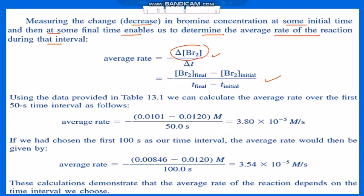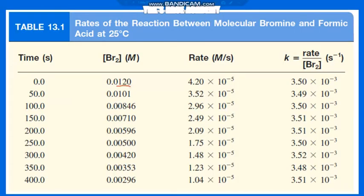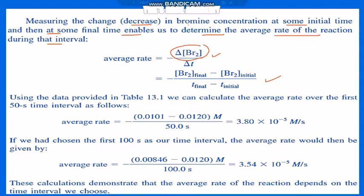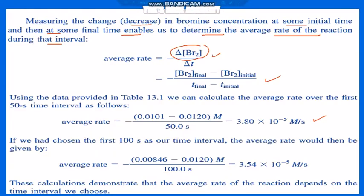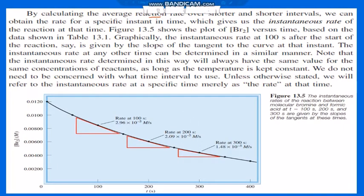A similar calculation at 100 seconds gives an average rate of 3.54 × 10⁻⁵ mol/L·s. These calculations demonstrate that the average rate of reaction depends on the time interval chosen. By calculating the average reaction rate over shorter and shorter intervals, we can obtain the instantaneous rate — the rate for a specific instant in time. The graph of bromine concentration versus time allows us to read instantaneous rates at 100, 200, and 300 seconds from the tangent slopes.